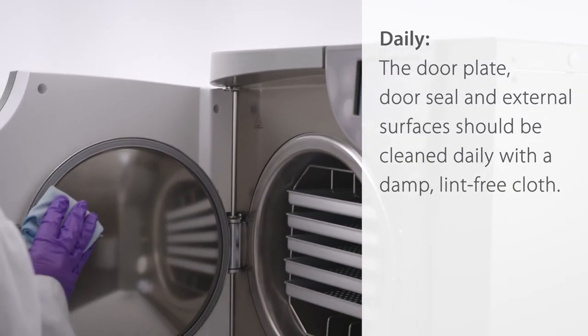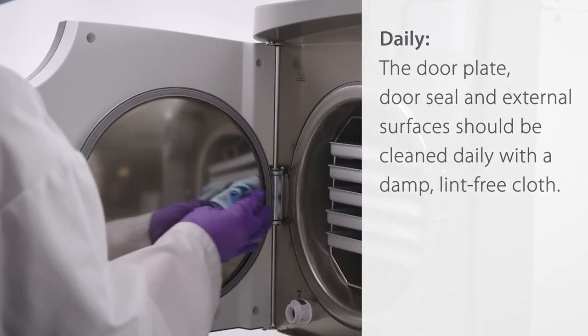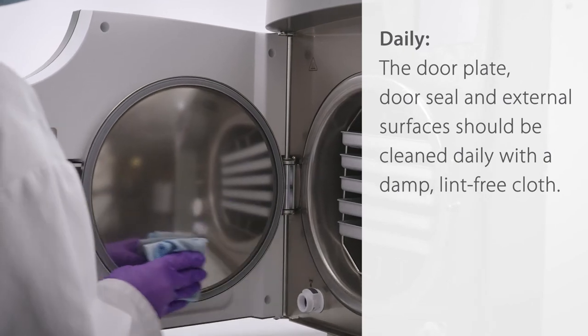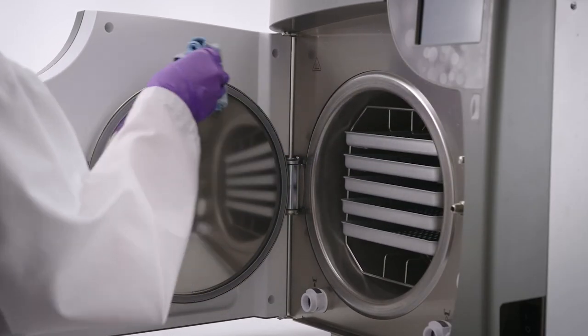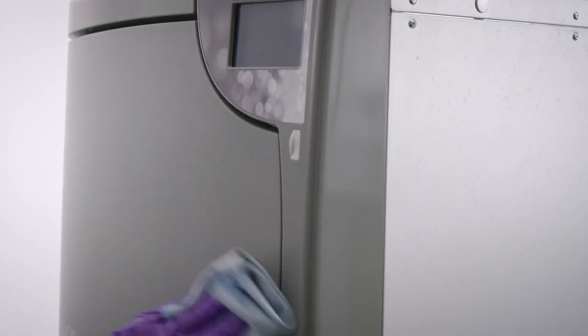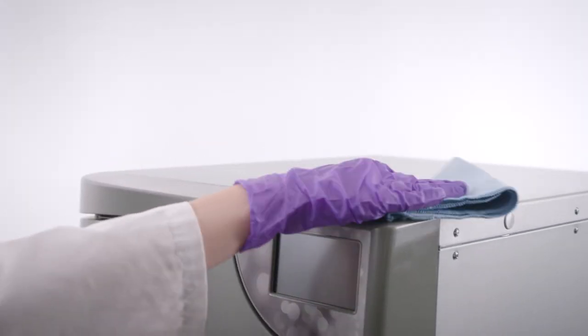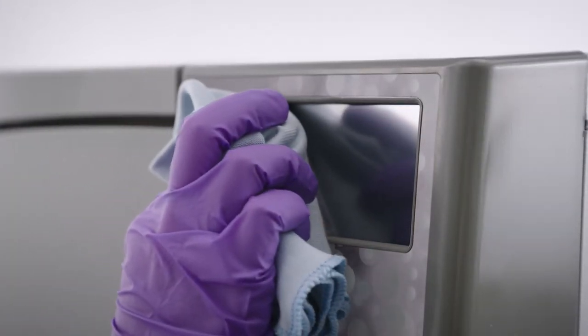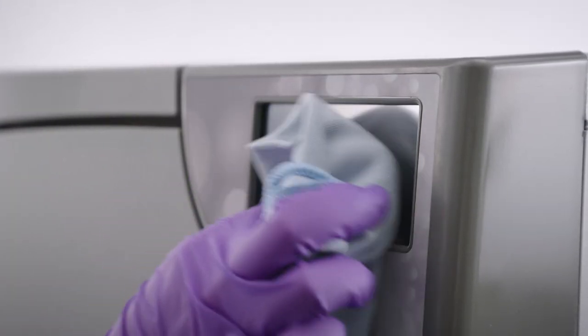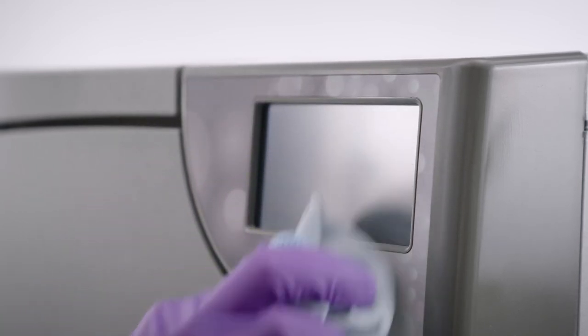Daily. The door plate, door seal, and external surfaces should be cleaned daily with a damp, lint-free cloth. Clean all the Bravo G4's external parts using a clean, lint-free cloth dampened with water and, if needed, a mild detergent. Dry the surfaces and remove any residue before powering the unit on.